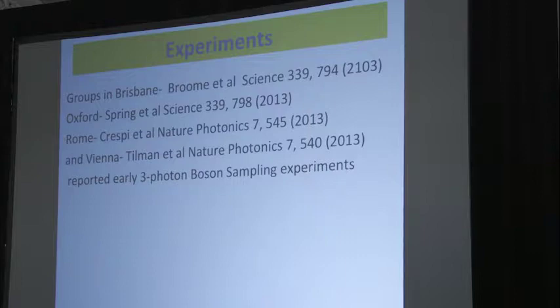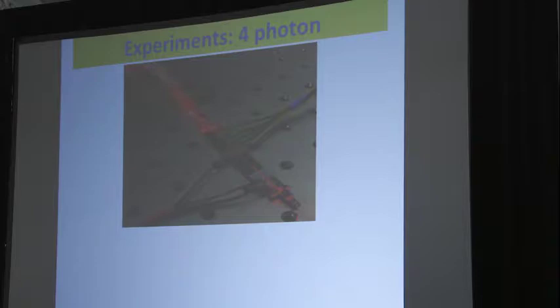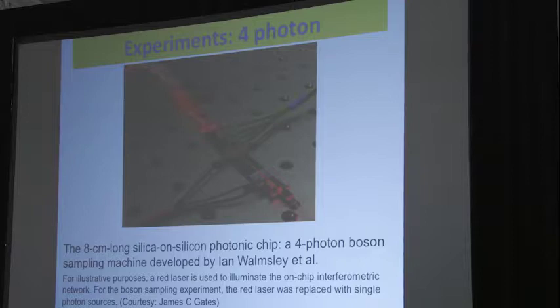Who did the experiments? Well a lot of people tried the experiments successfully. In Brisbane, it's Andrew White's group. In Oxford, in Walmsley's group. In Rome, that's Mataloni's group. In Vienna, that's Philip Walther's group, with three photons. So that's early stuff. Here's a four-photon picture. This is a little chip that Peter Smith built at Southampton University, and then the four-photon sources come in in Ian's group. This is from James Gait's. In the picture you see a red laser light coming in on this one. Of course you don't use red laser light, but it's hard to photograph the real frequencies that you use. And that's a Bose sampling with four. As I said, we're trying to scale this up so we can get to this business.